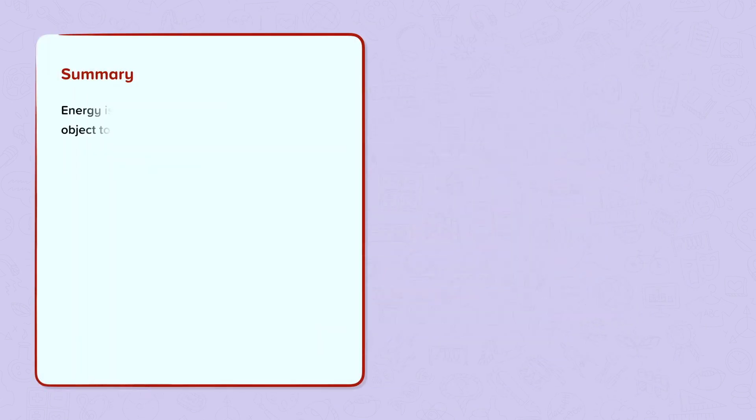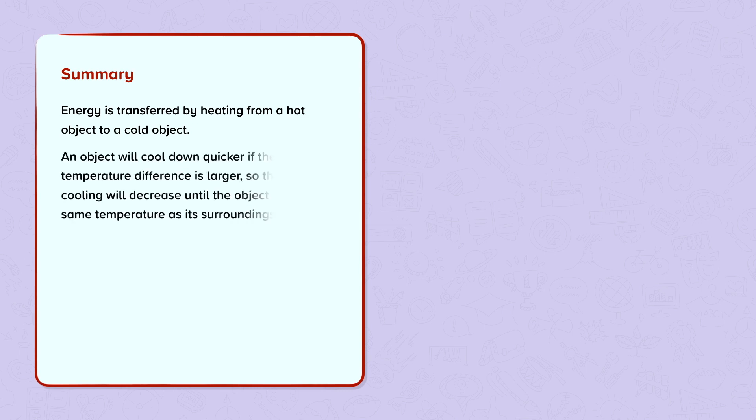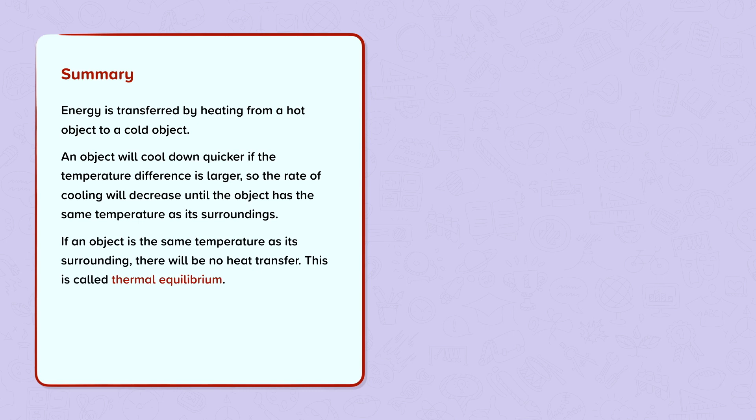To summarize. Energy is transferred by heating from a hot object to a cold object. An object will cool down quicker if the temperature difference is larger. So the rate of cooling will decrease until the object has the same temperature as its surroundings. If an object has the same temperature as its surroundings, there will be no heat transfer. And we call this thermal equilibrium.